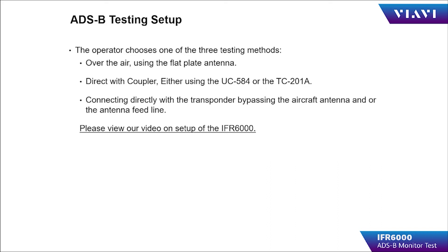Secondly, the operator can use the direct with coupler method using a coupler like the UC584 or the TC201A. Thirdly, the operator can use a direct connection to the transponder bypassing the aircraft antenna.